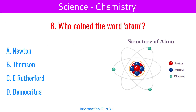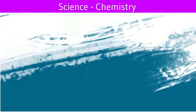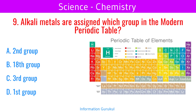Who coined the word atom? Democritus. Alkali metals are assigned which group in the modern periodic table? First group.